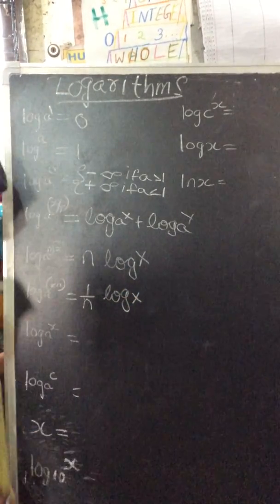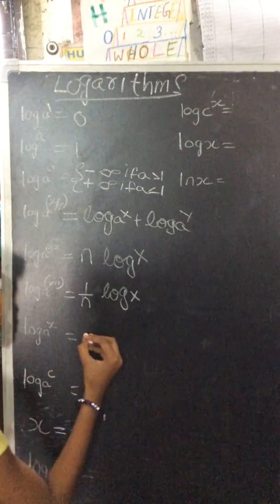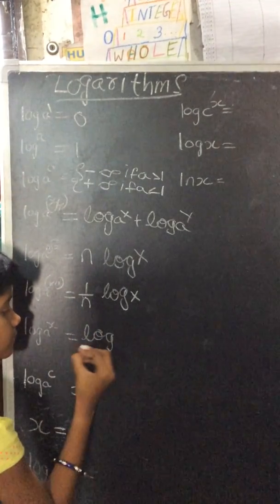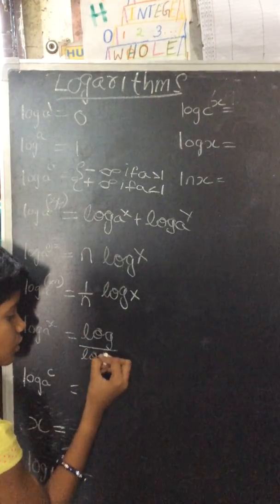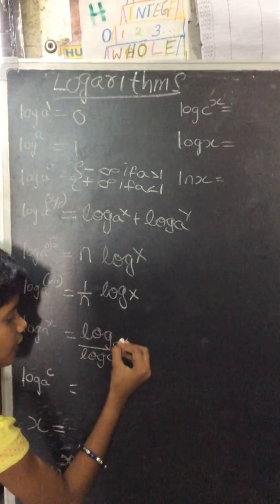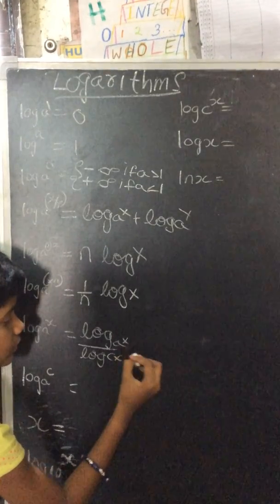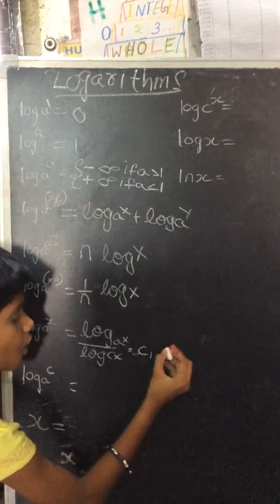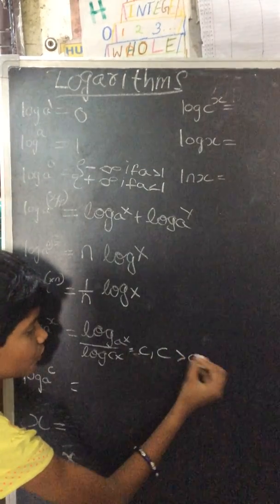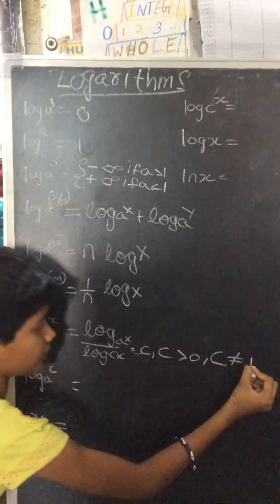log_a(x) = log_c(x) / log_c(a), where c > 0 and c ≠ 1.